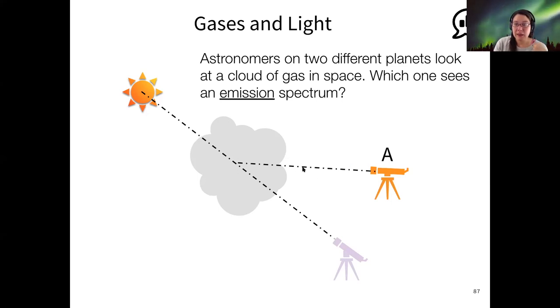But astronomer A, they're seeing the light that the gas is scattering in all directions. They're not pointed directly at the source. So if they were pointed directly at the source here, if they pointed their telescope that direction, they would see the same type of spectrum that astronomer B saw. But they're not. They're looking at an angle. So they're only seeing the light that the gas has absorbed and then re-emitted in all directions. So they are seeing the emission spectrum.